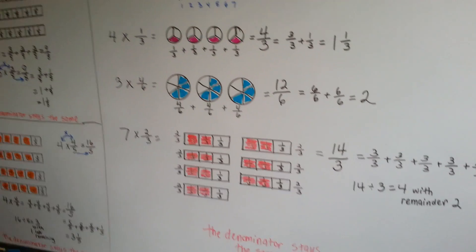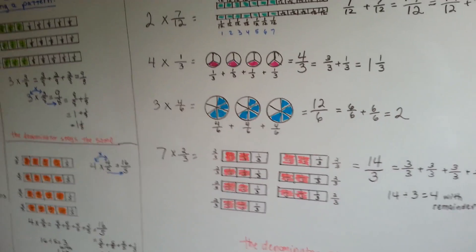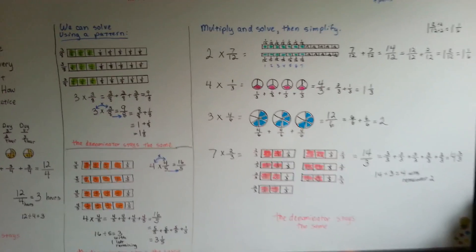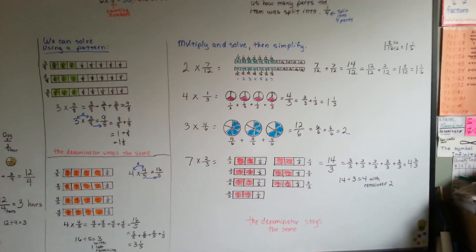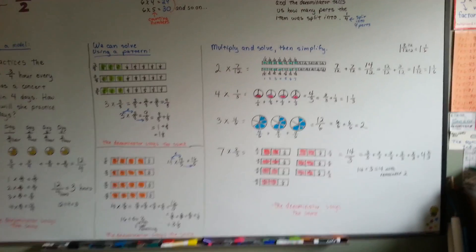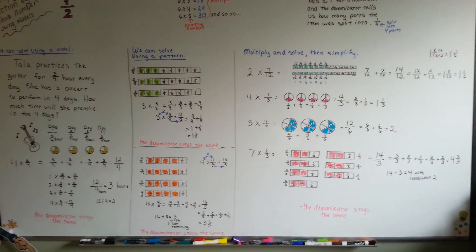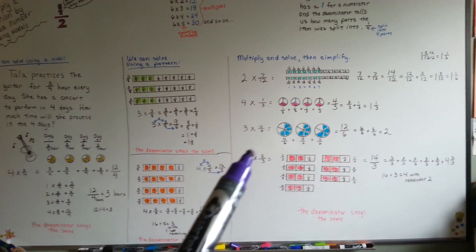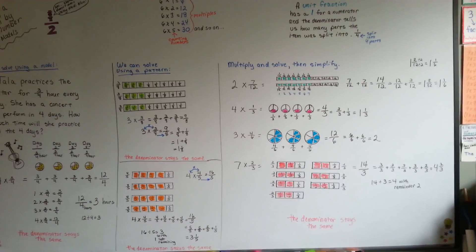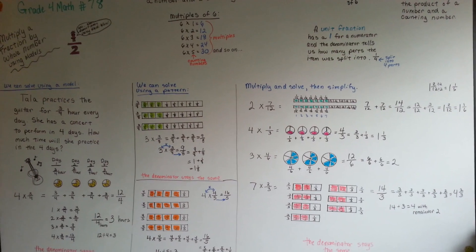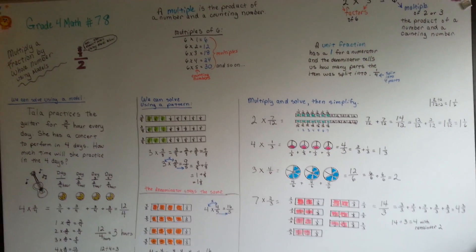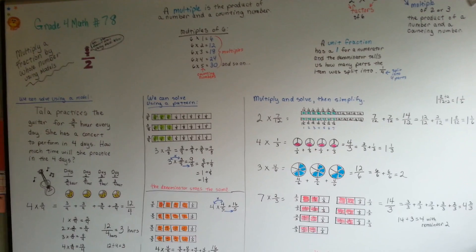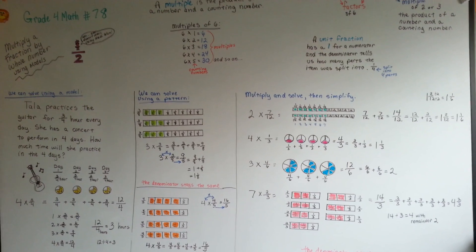So that's how we can use models to help us multiply fractions with whole numbers. Draw little pictures to help you figure it out. Remember that the denominator stays the same, and you can multiply the whole number by the numerator and keep the denominator, then simplify from there. We're going to keep talking about math and fractions, and I'll see you in the next video. Bye!